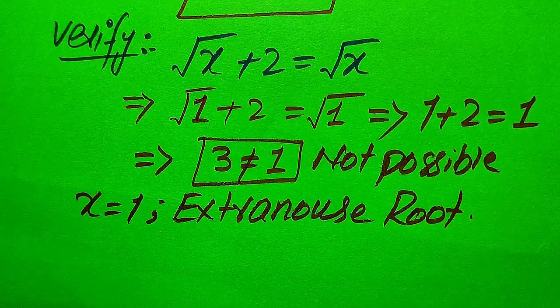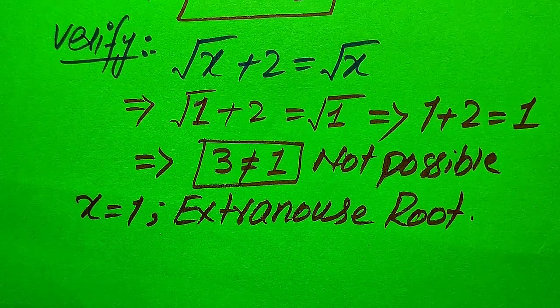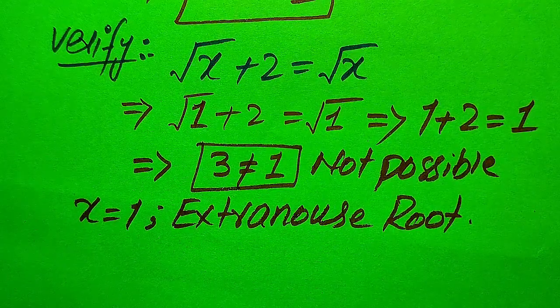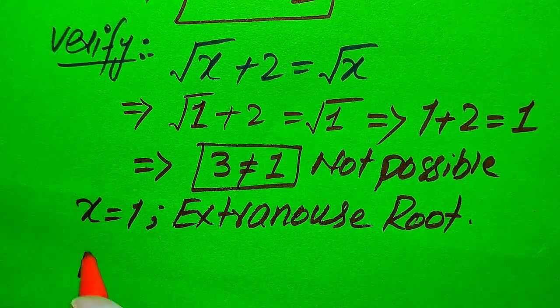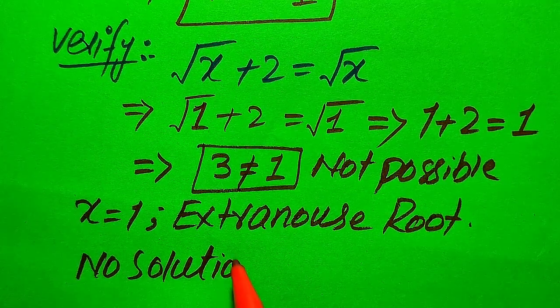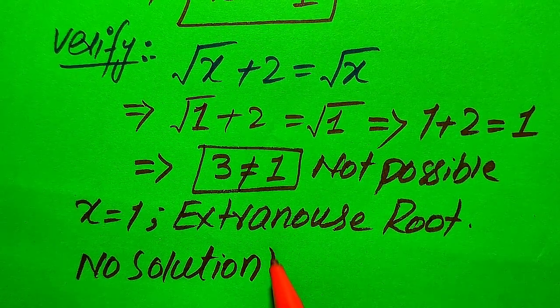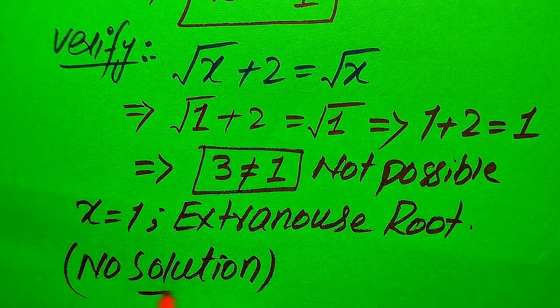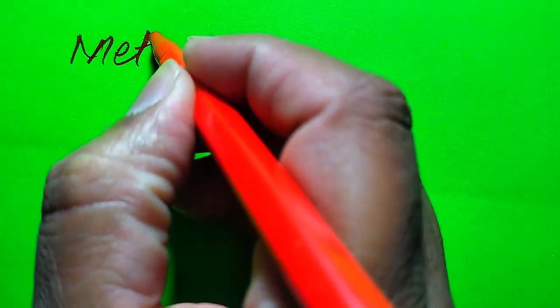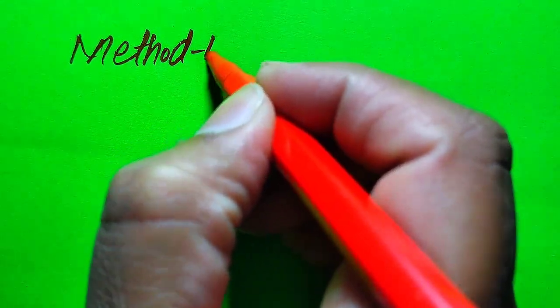Since x equals 1 is an extraneous root, we cannot get any other value of x that satisfies the given equation. So we finally conclude that this equation has no solution. This is the final conclusion for the first method.